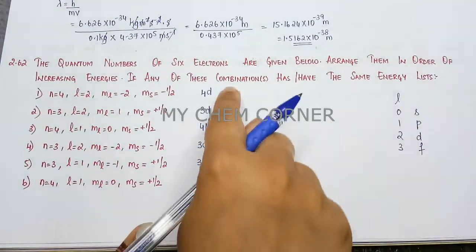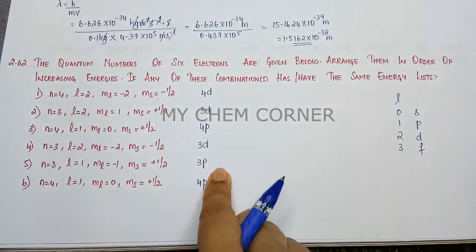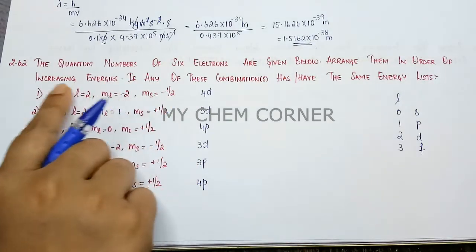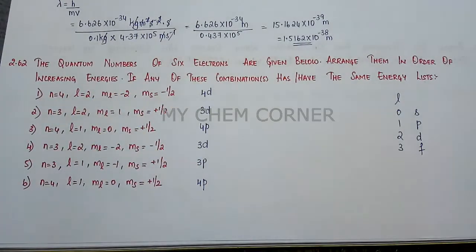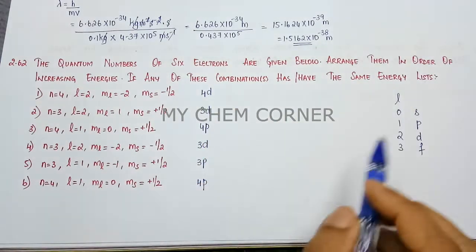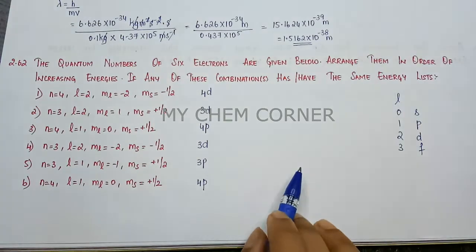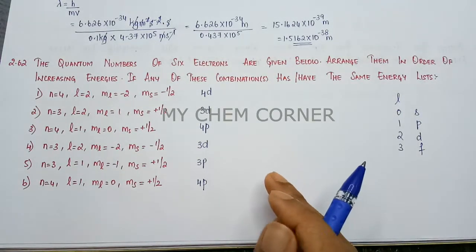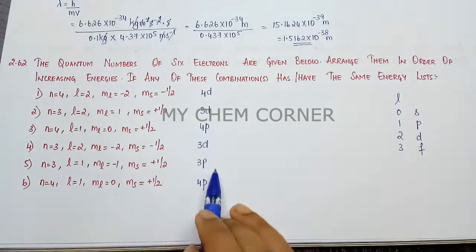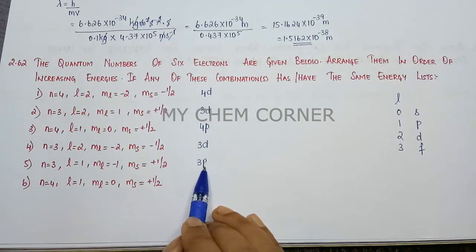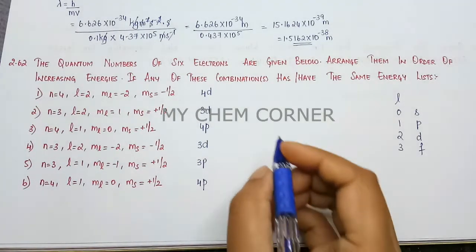Now we have got what the orbitals are. We need to arrange them in increasing energy. Based on the Aufbau principle, we go as per increasing energy. Of all this, 3p will have the least energy.